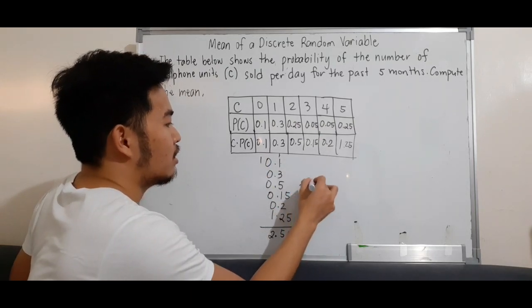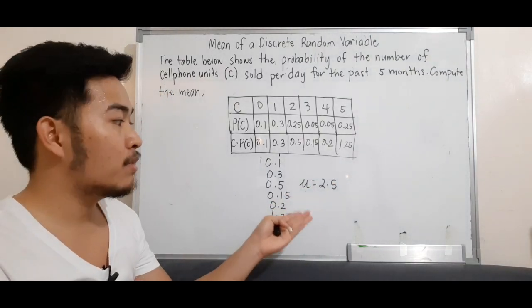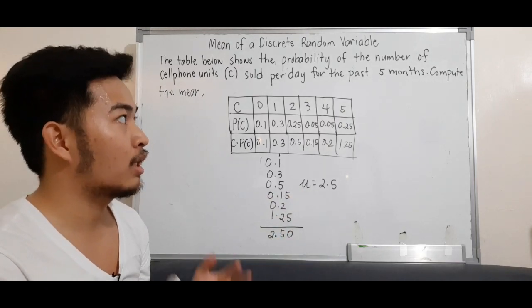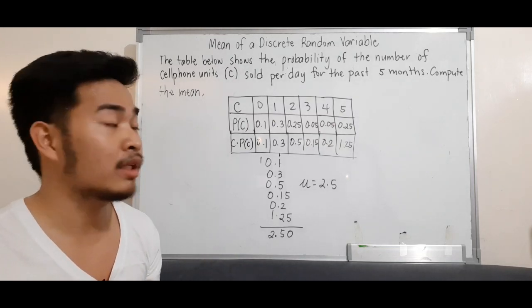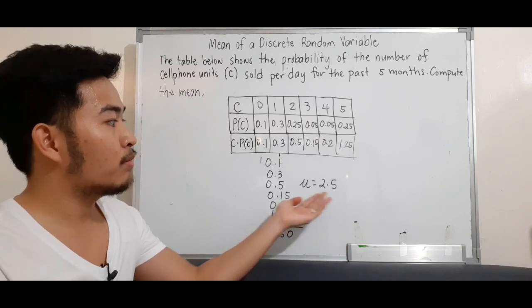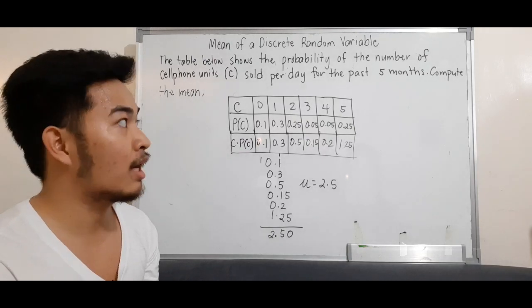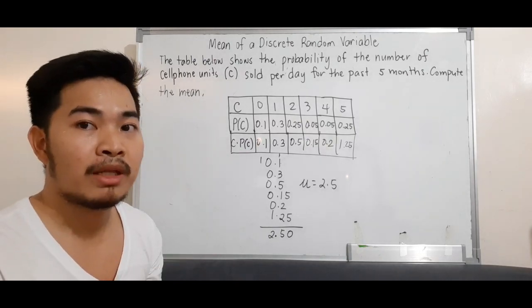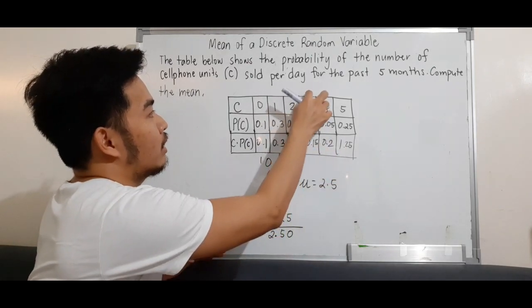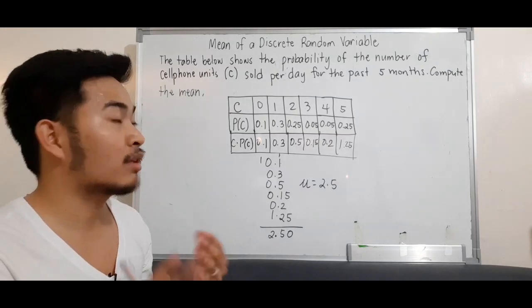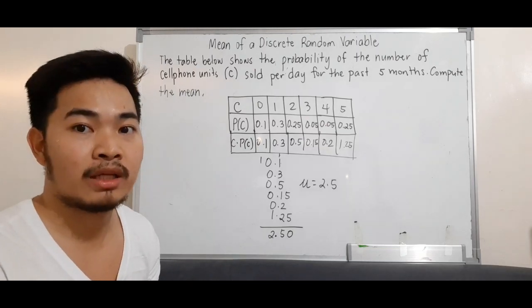So that means the mean equals 2.5. What does a mean or expected value of 2.5 mean? Stores use this when recording probability. They can use this mean of 2.5—for the next 5 months, the expected number of cellphones they'll sell per day is between 2 and 3. That means three or two cellphones will be sold per day for the next 5 months. That's the expected value.